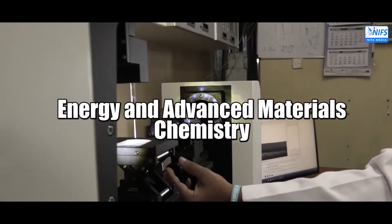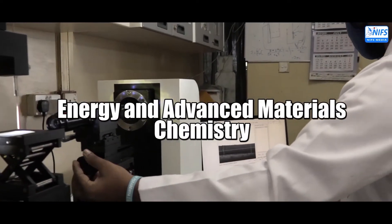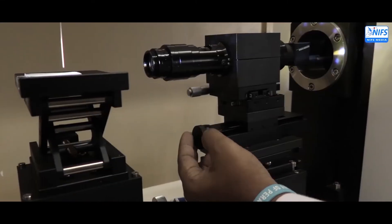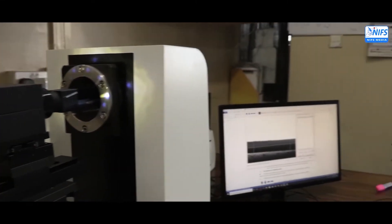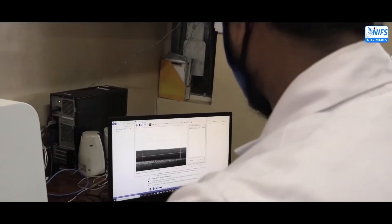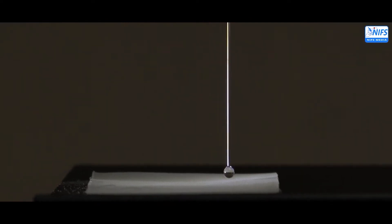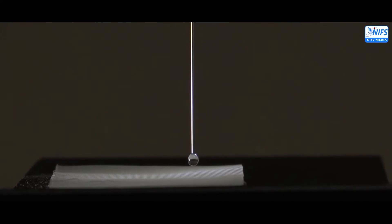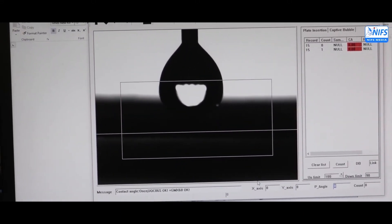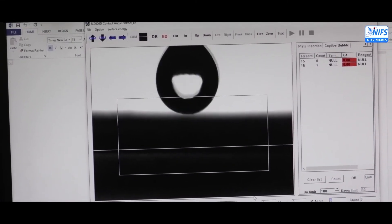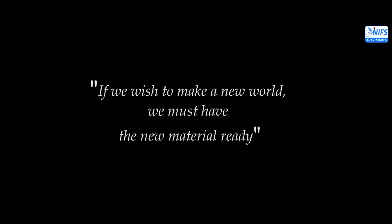The aim of the Energy and Advanced Materials Chemistry researchers is to devise new avenues for renewable energy. They devised artificial chemical devices to mimic the natural photosynthetic process to produce green fuels. The researchers also devised chemical and photochemical methods for pollution control. Additionally, a multi-faceted approach was proposed to elucidate CKDU etiological factors. If we wish to make a new world, we must have the new material ready.